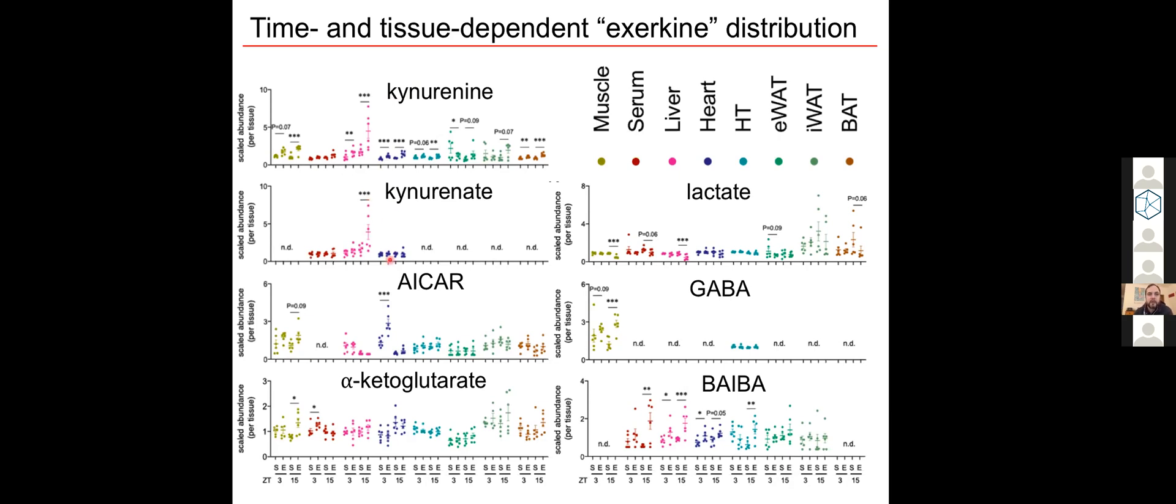This is especially the case for liver kynurenin and kynurenate. But on the other hand, ICAR in the heart was selectively increased by exercise during the day, as was the serum alpha-ketoglutarate.